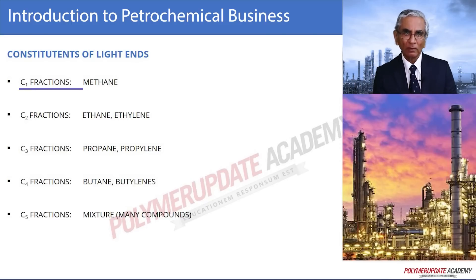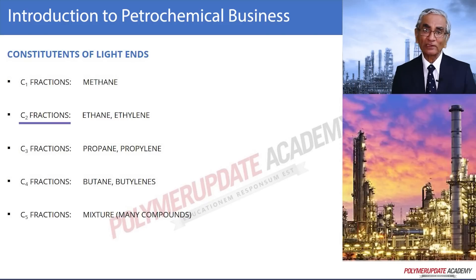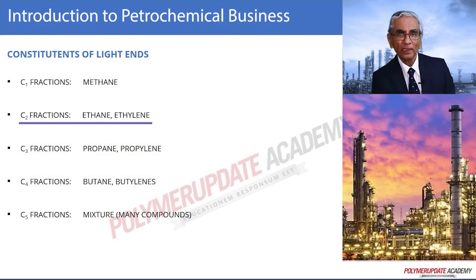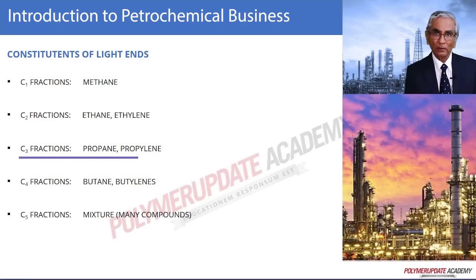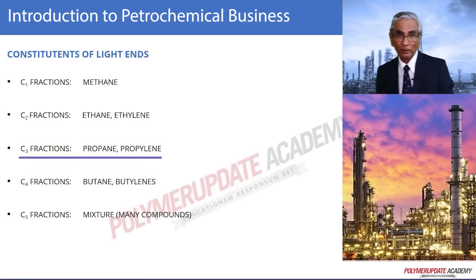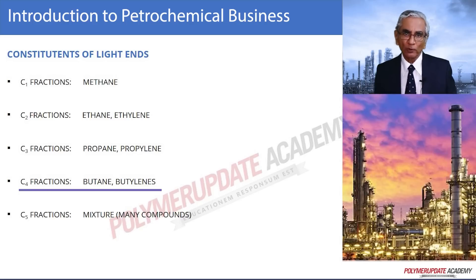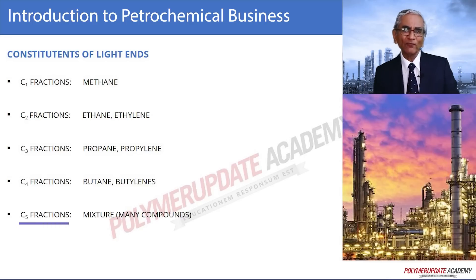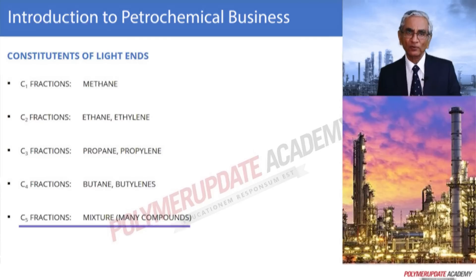The constituents of the light ends are: C1 fraction — mainly methane; C2 fractions — ethane or ethylene; C3 fractions — propane or propylene; C4 fractions — butane and butylenes; and C5 is a mixture of a number of compounds.